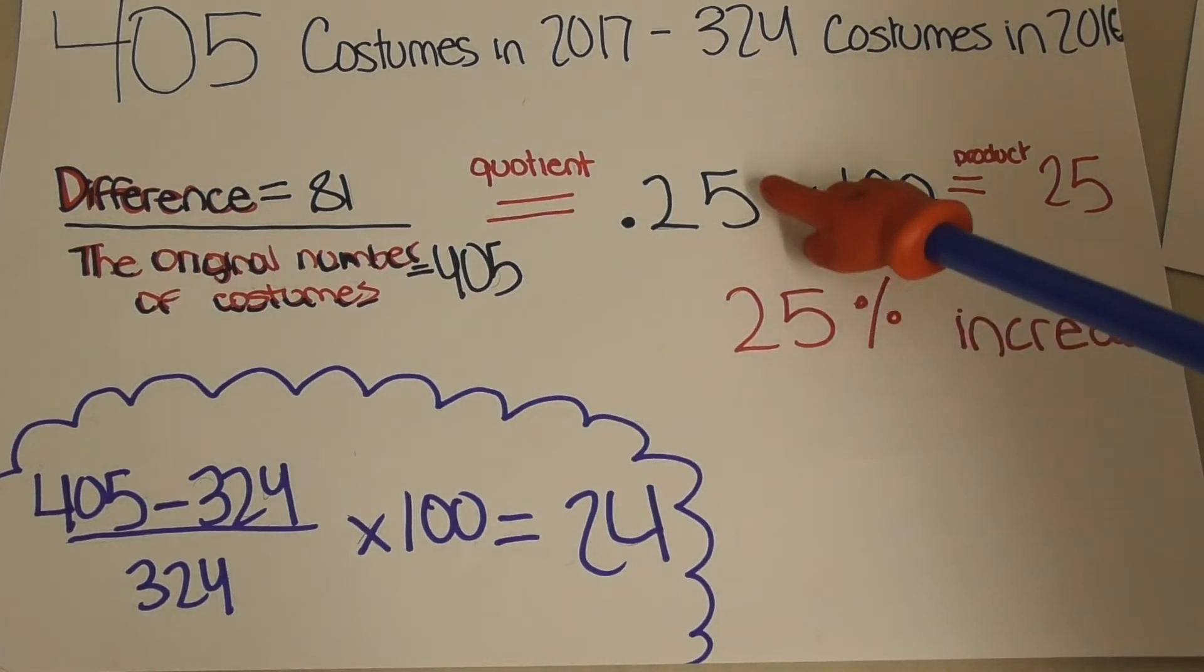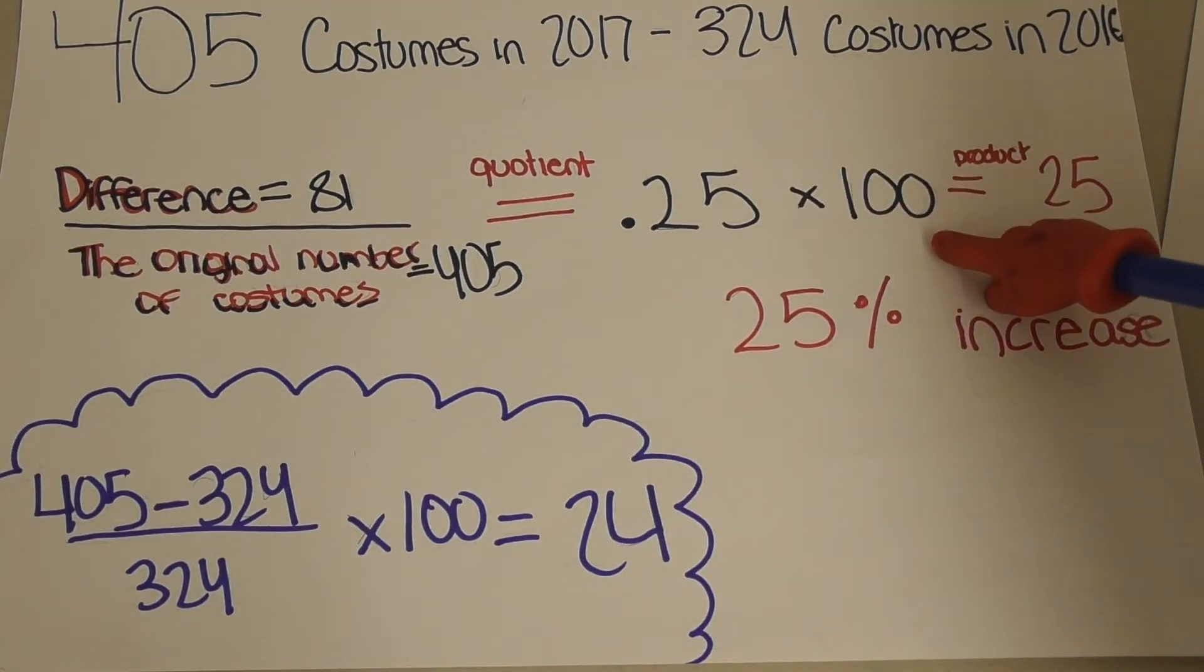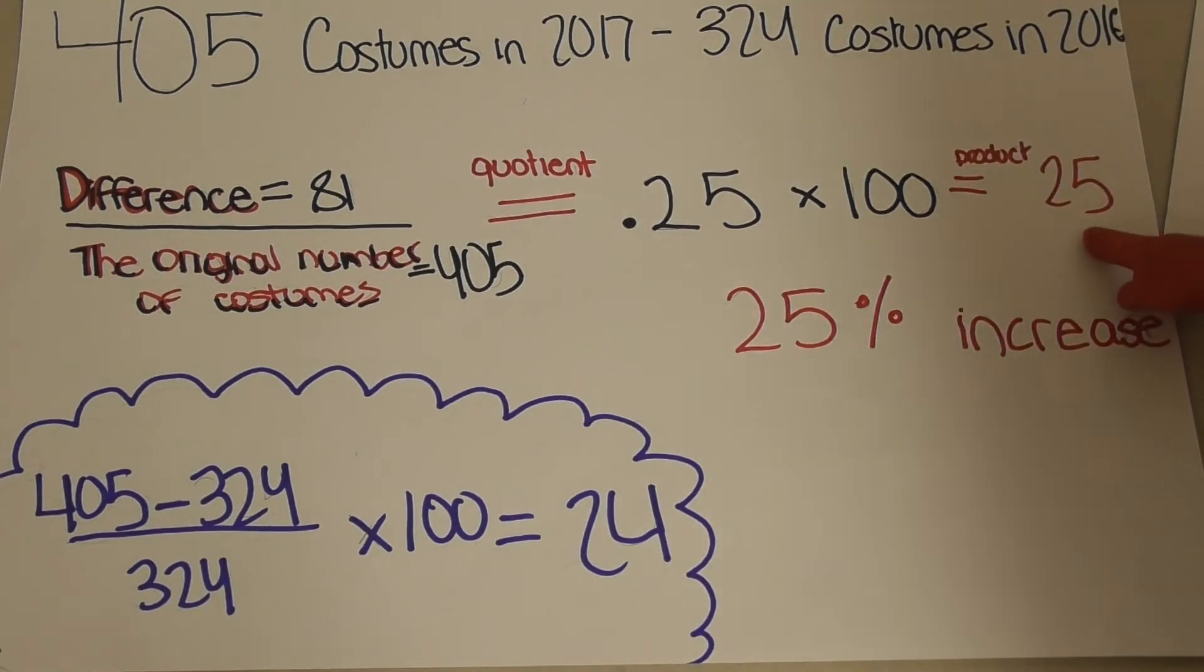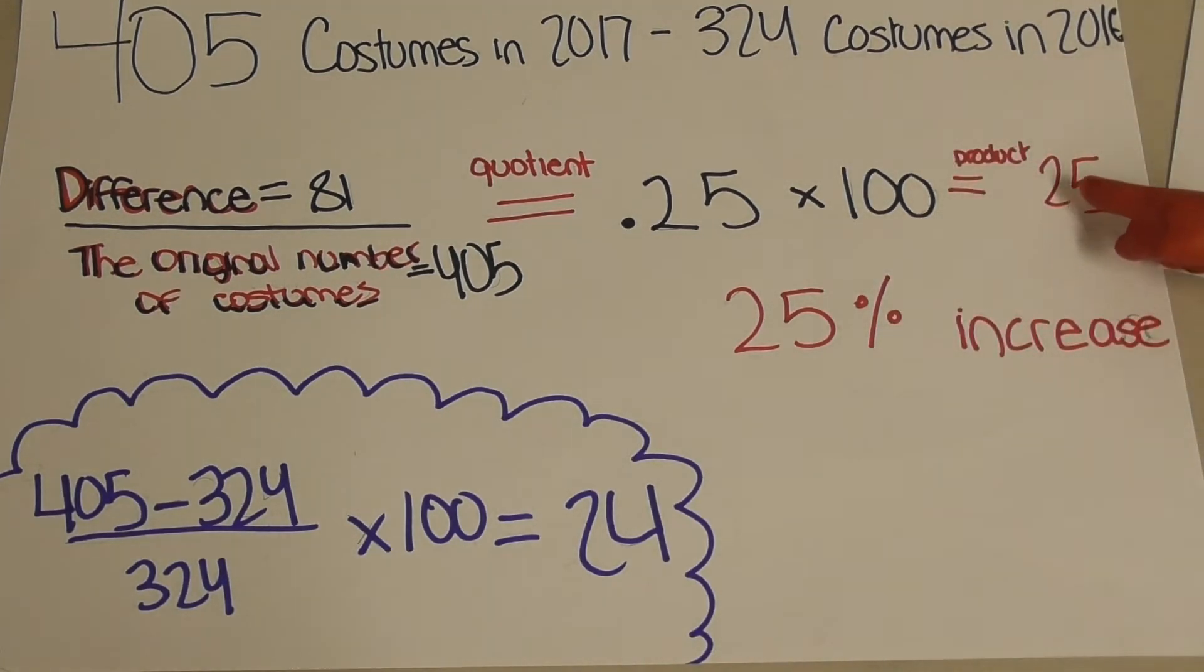Next, we must multiply the quotient by 100 to convert to a percent. We get 25% as our answer, which means 25% more of the students wore their Halloween costumes to school in 2017.